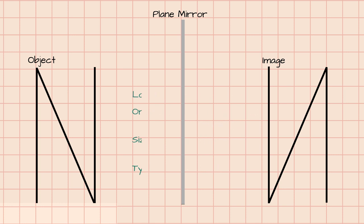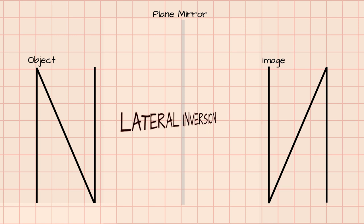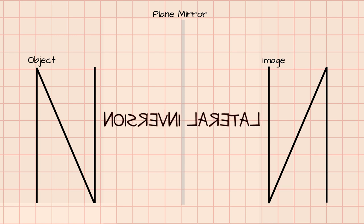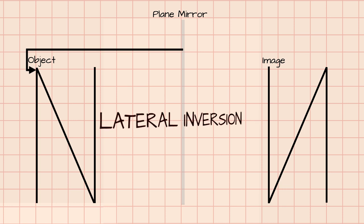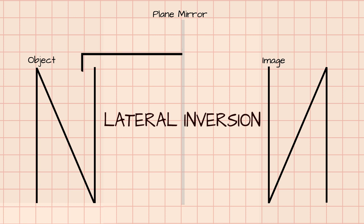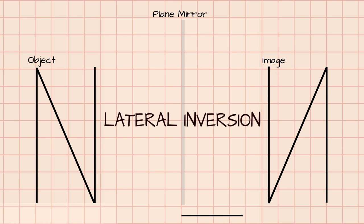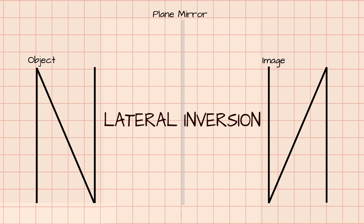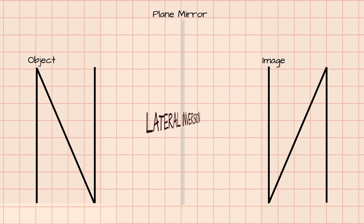Aside from these descriptions, the image formed in a plane mirror is in lateral inversion. It means that the left part of the object becomes the right part of the image, while the right part of the object becomes the left part of the image. The centermost part of the image remains the same as in the object. This left-right reversal happens because the word is being inverted or flipped from front to back direction.